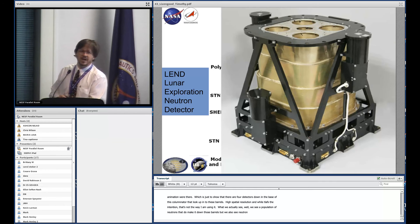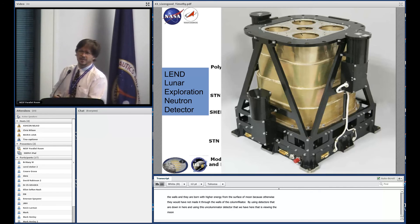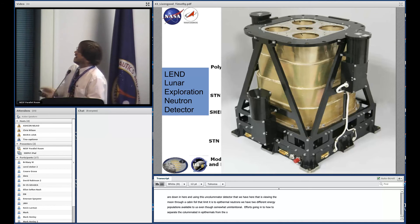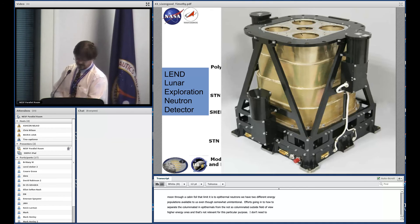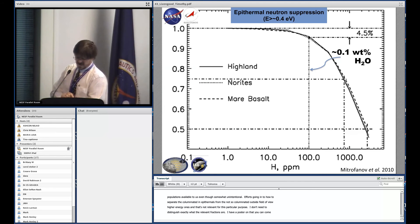While that was the intention, that's not how I'm using it. We see a population of neutrons that make it down those barrels, but also neutrons that make it through the walls. They're born with higher energy from the surface because otherwise they wouldn't have made it through the walls of the collimator. By using the detectors down here and this uncollimated detector viewing the moon through a cadmium foil that limits it to epithermal neutrons, we have two different energy populations available.